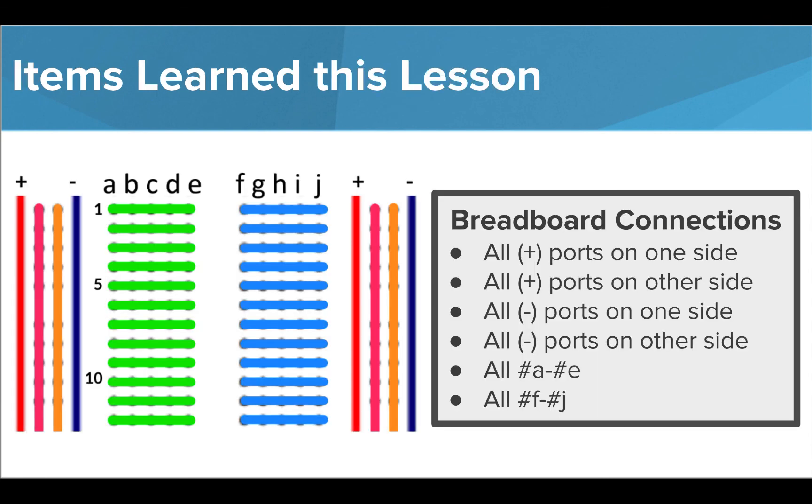Let's summarize all we learned here. We learned how to use breadboards to make circuits. We learned that all positive ports on either side of the board are connected, all negative ports on either side of the board are connected, all numbered A through E ports are connected, and all numbered F through J ports are connected.